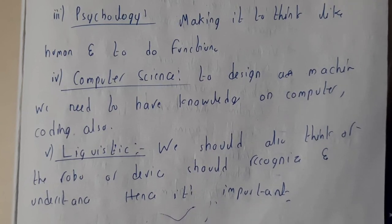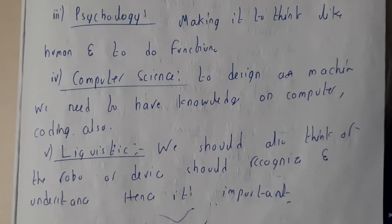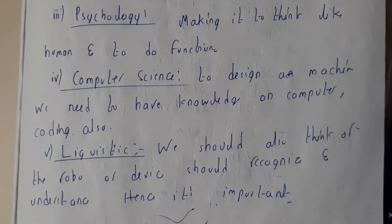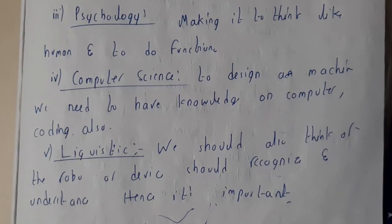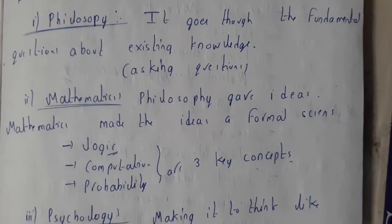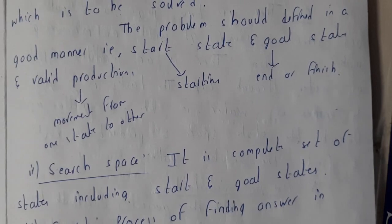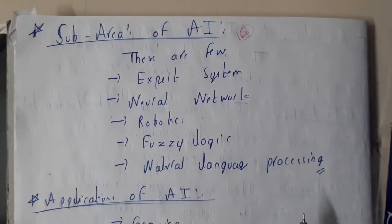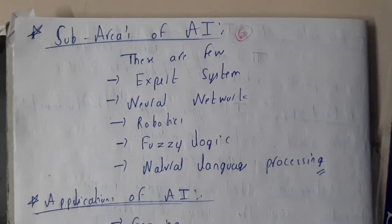For example, if you speak English in a high pitch or a low pitch, the system should understand. Have you faced problems talking with Google Assistant or Siri? It can go really fast. That's why these are the main foundations of AI. In the next lecture we will go through the sub-areas and applications of AI. Thanks for watching!